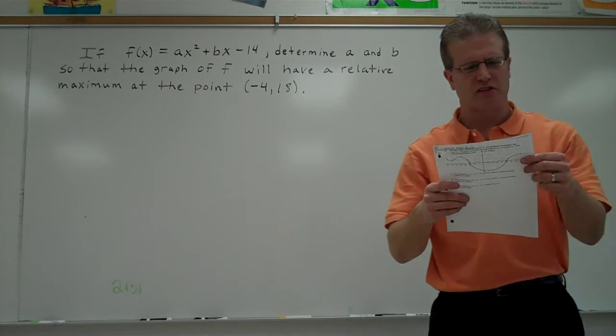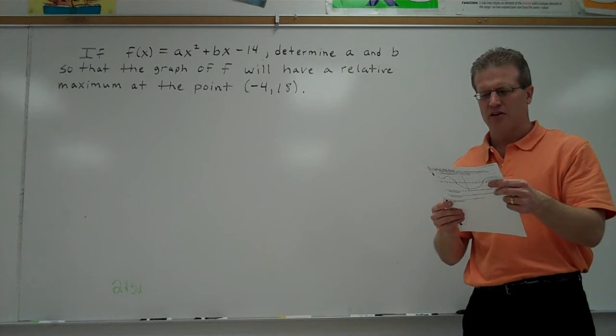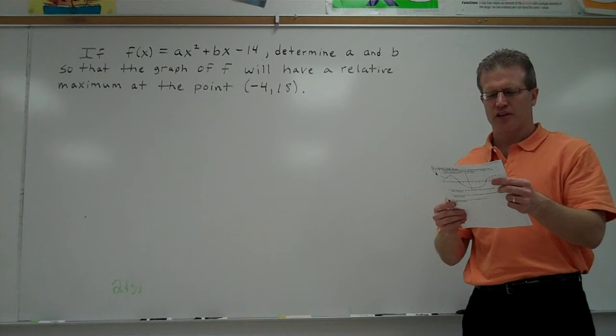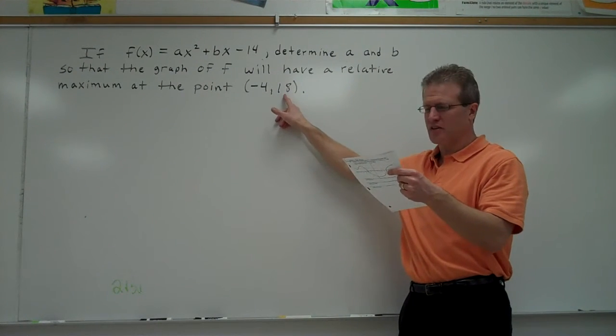All right, the problem we're doing says if f(x) equals ax squared plus bx minus 14, determine a and b so that the graph of f will have a relative maximum at the point negative 4, 18.